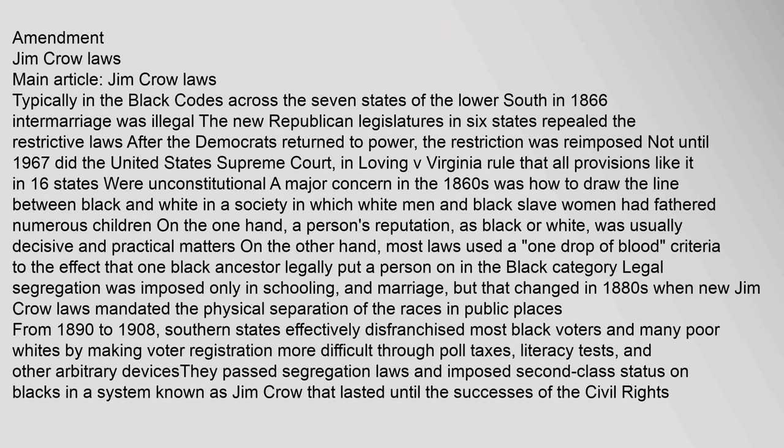Typically in the black codes across the seven states of the Lower South, in 1866 intermarriage was illegal. The new Republican legislatures in six states repealed the restrictive laws. After the Democrats returned to power the restriction was reimposed; not until 1967 did the United States Supreme Court in Loving v. Virginia rule that all provisions like it in 16 states were unconstitutional. A major concern in the 1860s was how to draw the line between black and white. Most laws used a 'one drop of blood' criteria, so that one black ancestor legally put a person in the black category.